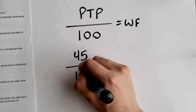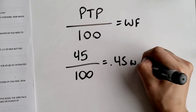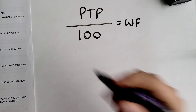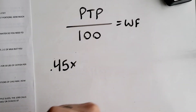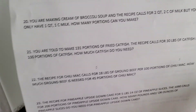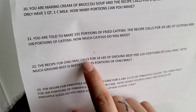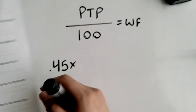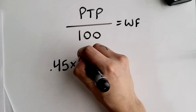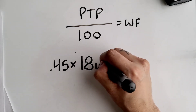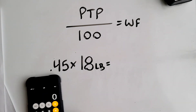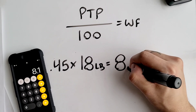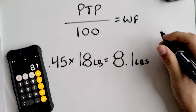So 45 divided by 100 equals 0.45 — that is your working factor. After you get your working factor, you multiply it by your ingredients. In this case the recipe for chili mac calls for 18 pounds of ground beef per 100 portions, so that's what you multiply your working factor by. So 0.45 times 18 pounds equals 8.1 pounds. Don't forget to label it.